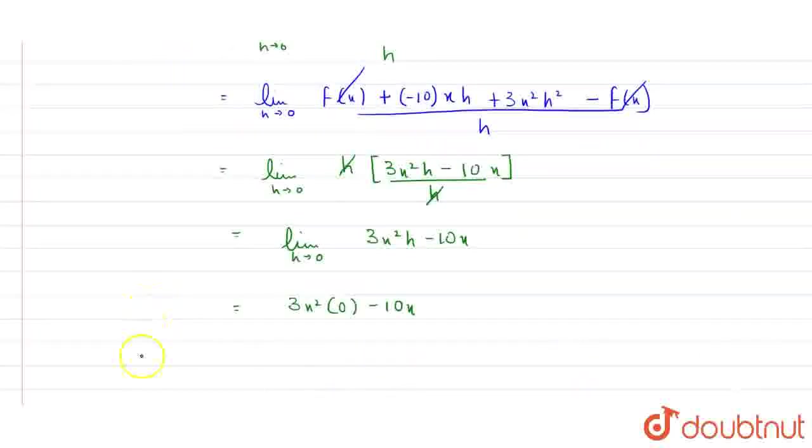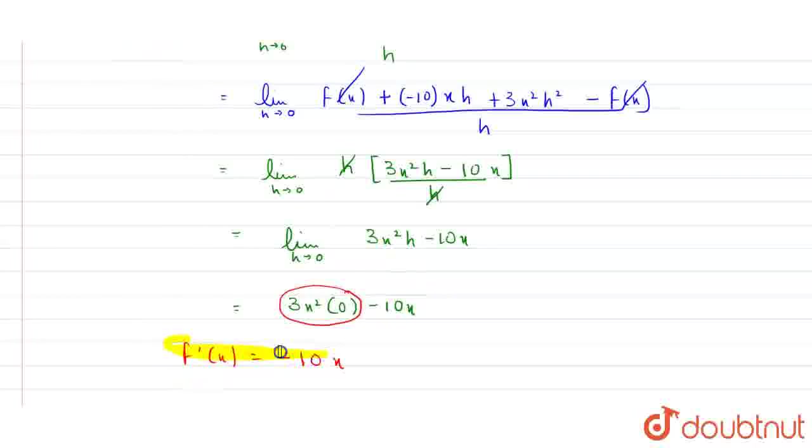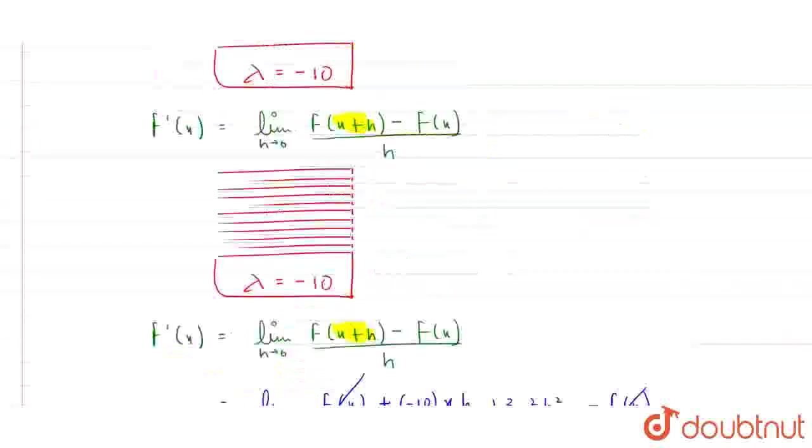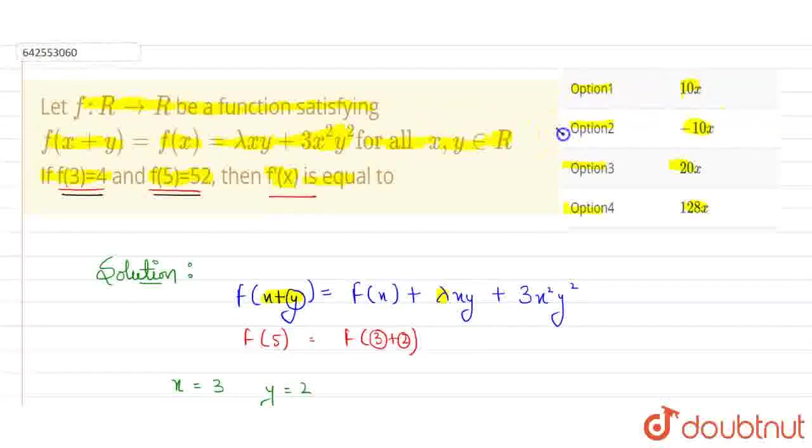So, my f dash x that we were supposed to find in the equation, f dash x is equals to minus of 10 x. Because this whole term is getting 0, minus 10 x. This is my final answer, so let's match it with options. Minus 10 x. Here, option 2 is getting matched, so option 2 is correct, thank you.